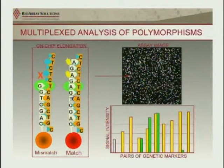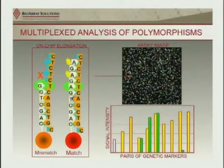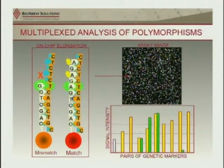The amplicons are added to the array. If there's a match at a probe, the sequence attaches and elongates using fluorescently tagged dNTPs; if there's a mismatch, it doesn't elongate. After incubation, you essentially take a picture of the chip. The chip can be run as 96 wells or eight on a slide — we use the eight-slide platform.